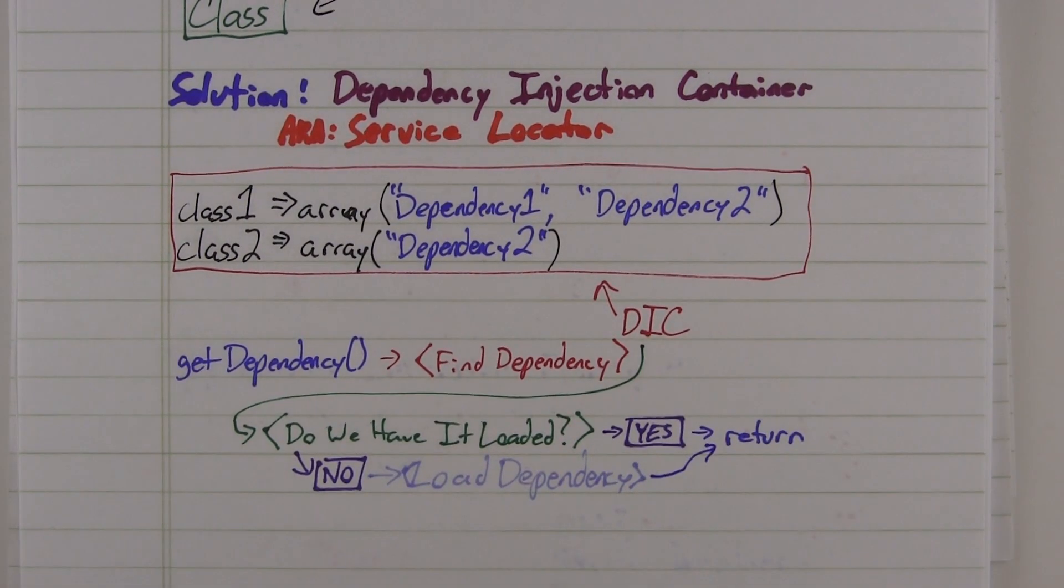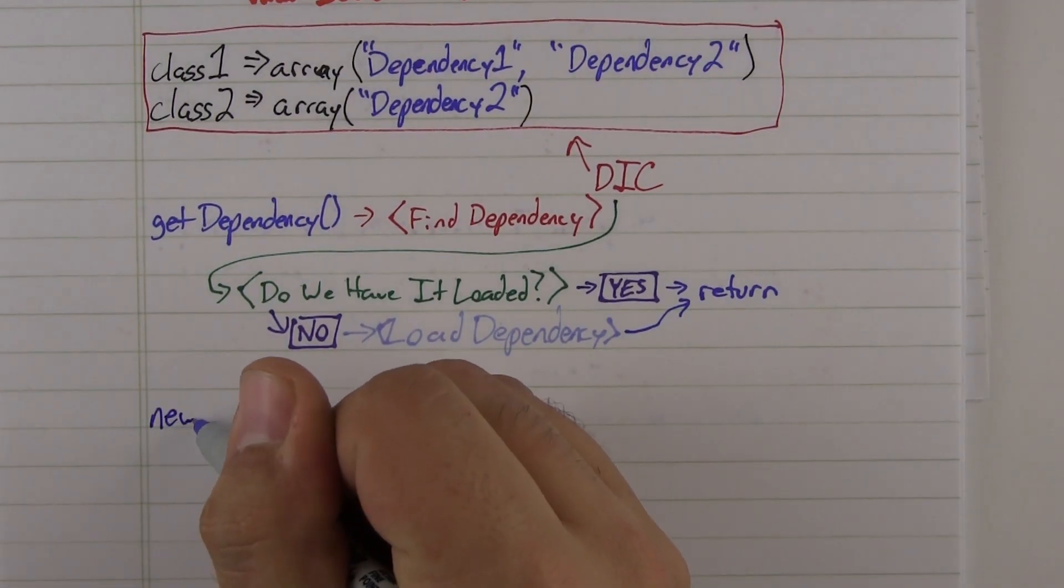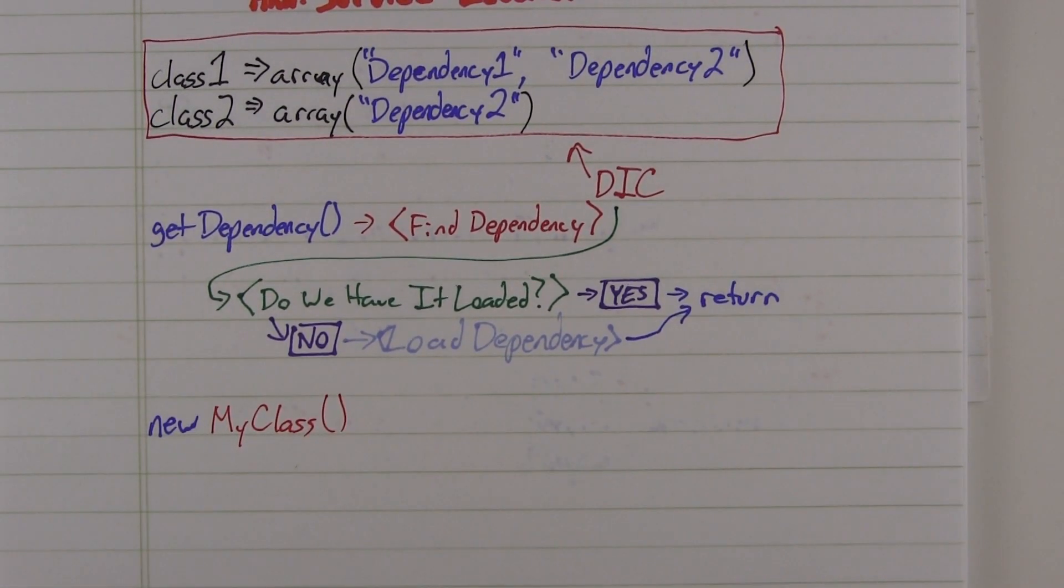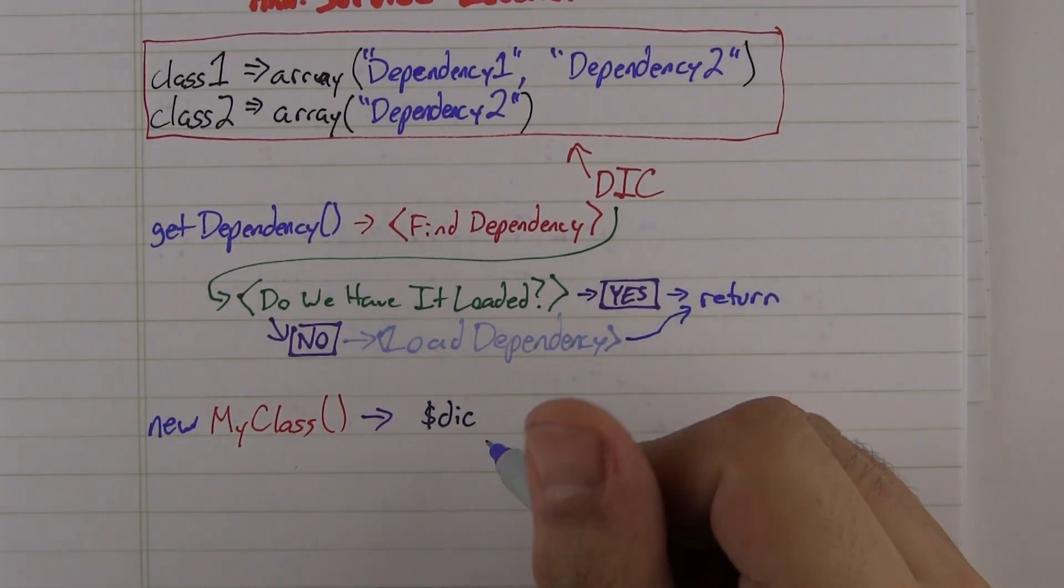So instead of constructing all of your classes yourself, you ask the container for a new instance. It will then resolve the dependencies, construct your object, and return it to you.